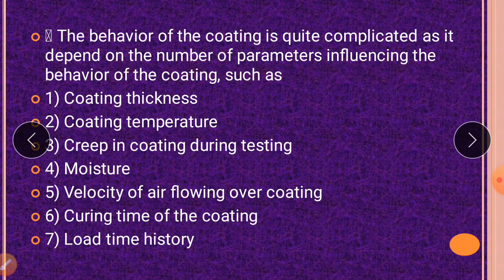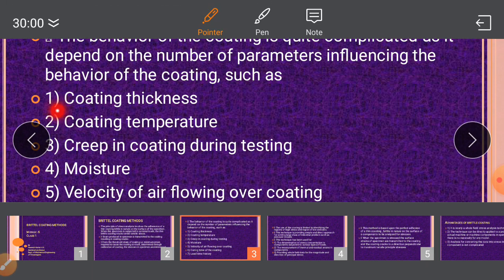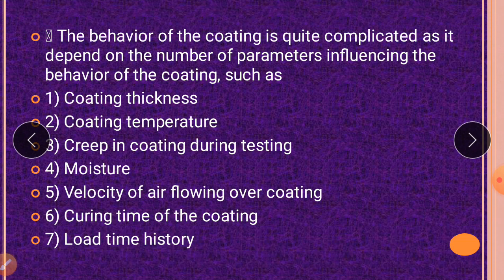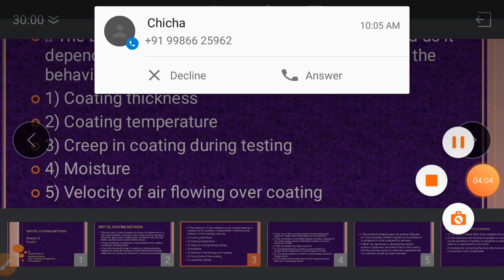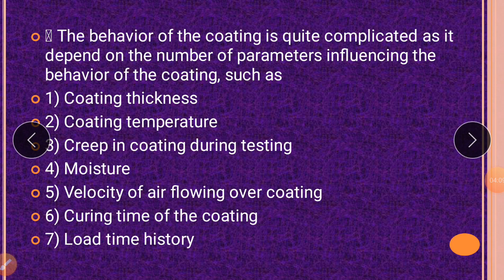The behavior of the coating is quite complicated as it depends on a number of parameters. The first is coating thickness — if you apply a thicker coating, cracks may generate at various load applications, but a thin coating behaves differently. Another parameter is coating temperature: the coated material has temperature limits, and if those limits are exceeded it loses its properties. Creep in the coating during testing also affects the determination of stress in the material.